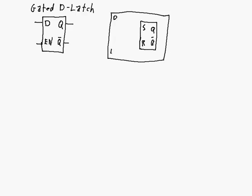Here's my D-input and here's my E enable input. The enable signal goes directly to the enable of the gated SR-latch. My D-input comes in and goes to the S, and it also goes to the reset but passes through an inverter first. So if D is a 1, I'll have a 1 go to S and a 0 go to R. If D is a 0, I'll have a 0 go to S and a 1 going to R. So a 1 sets and a 0 resets.